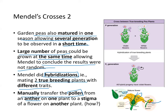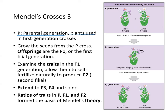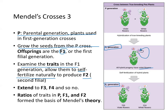If you were to take true breeding violet and true breeding white flowers and cross them, you get all violet flowers — that's kind of strange. In the P generation, or parental generation, you grow seeds from the parental cross, and the offspring are called F1s. All F1 plants had purple or violet flowers. You then examine the traits of the F1 generation and allow them to self-fertilize naturally to generate the filial 2, or second generation.